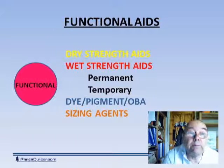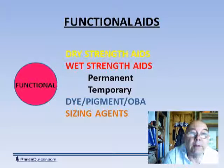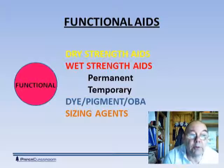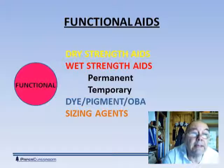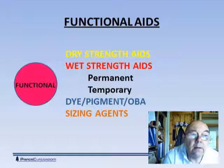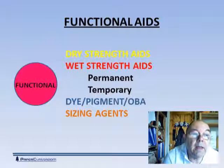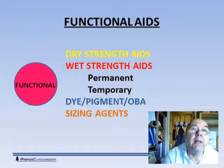Dry strength aids such as starch — these days it will be cationic starch. Wet strength aids fall into two categories: there is permanent wet strength, which is something a tea bag will need, and temporary wet strength, something a toilet roll will need. Examples of permanent wet strength are usually based on nitrogen chemistry — things like melamine and urea formaldehydes are the old-fashioned type, still used today, and more modern wet strength agents are based on polyamine compounds. Temporary wet strength is normally based on something like a dialdehyde starch.